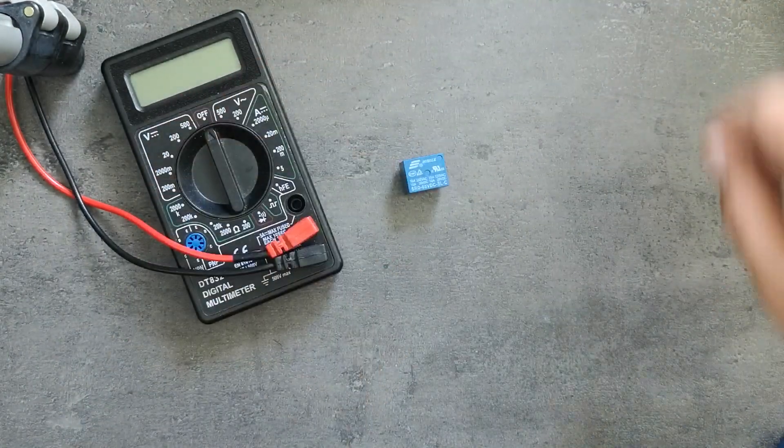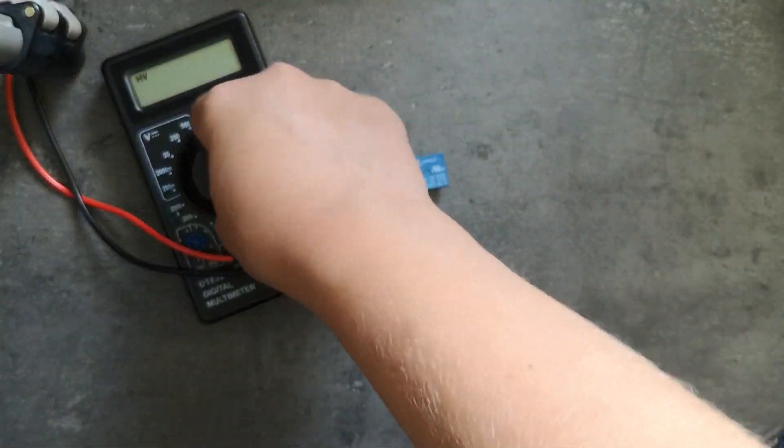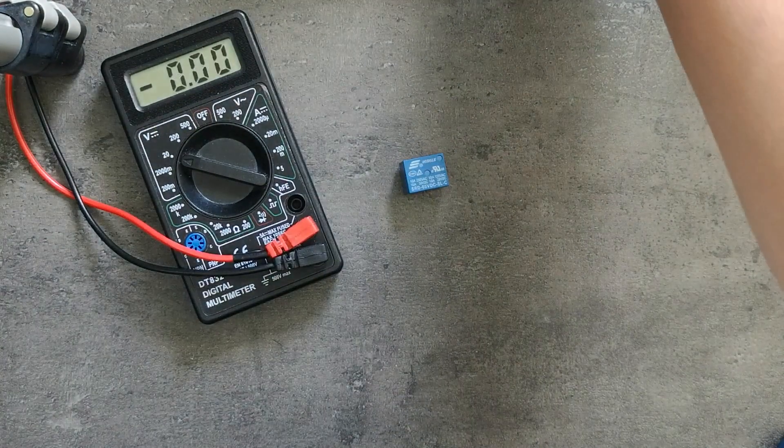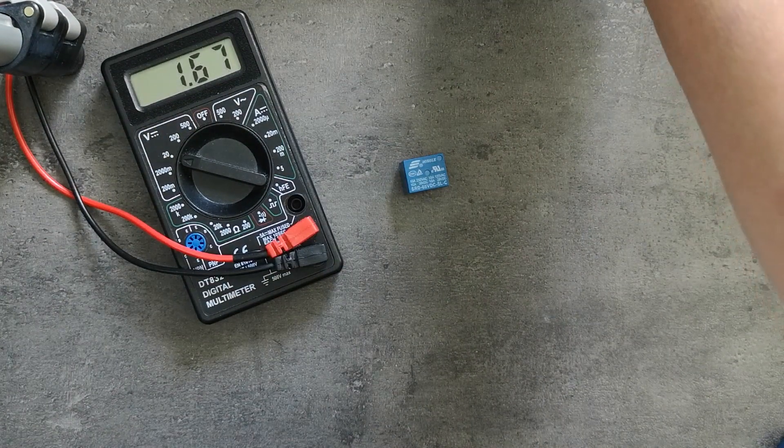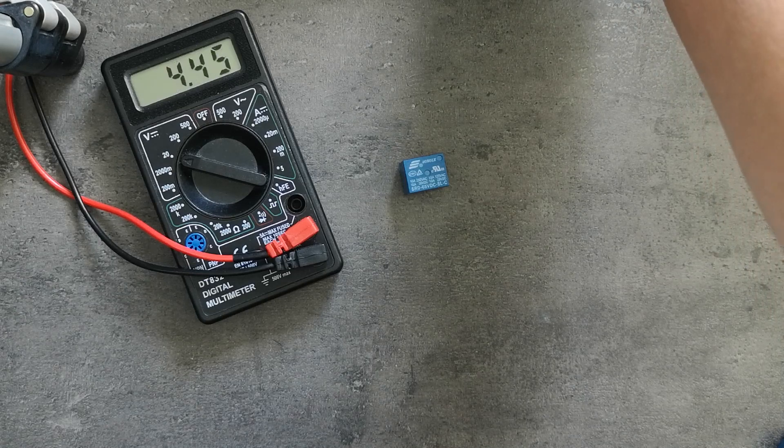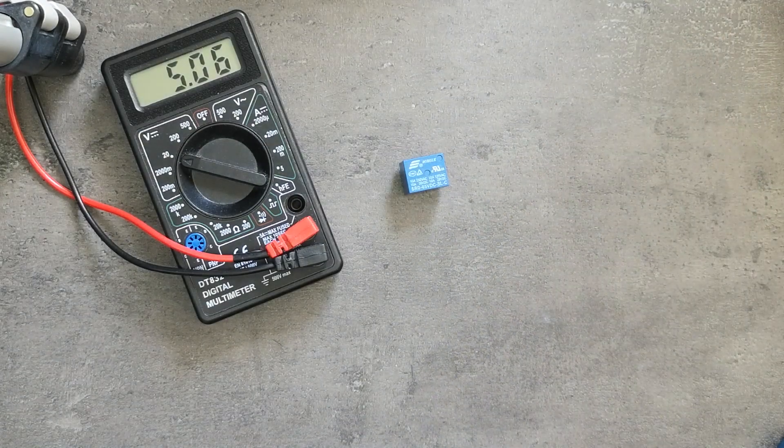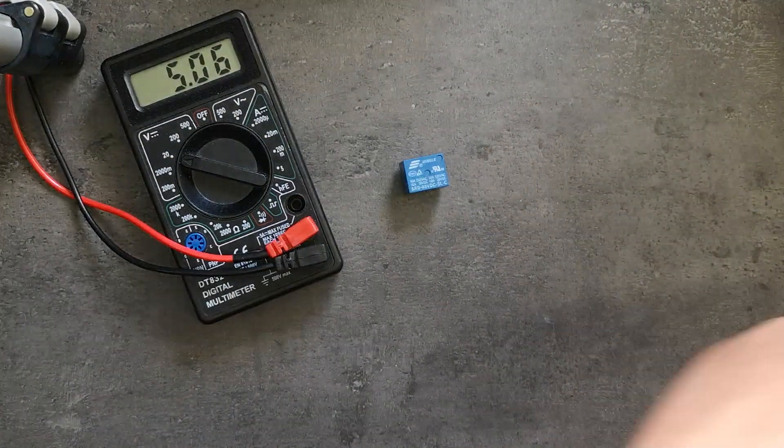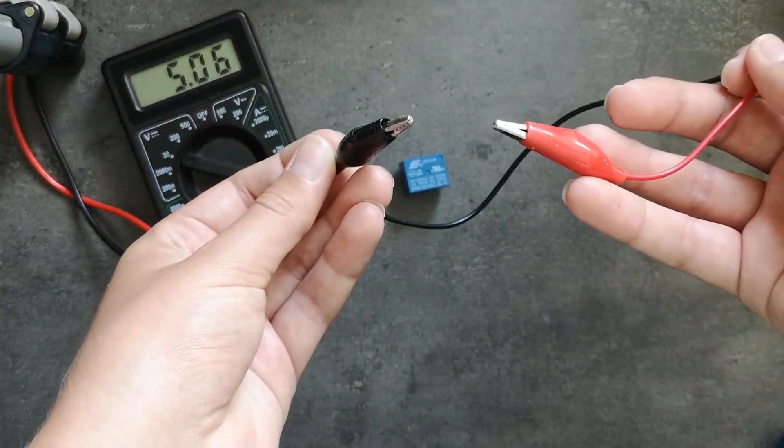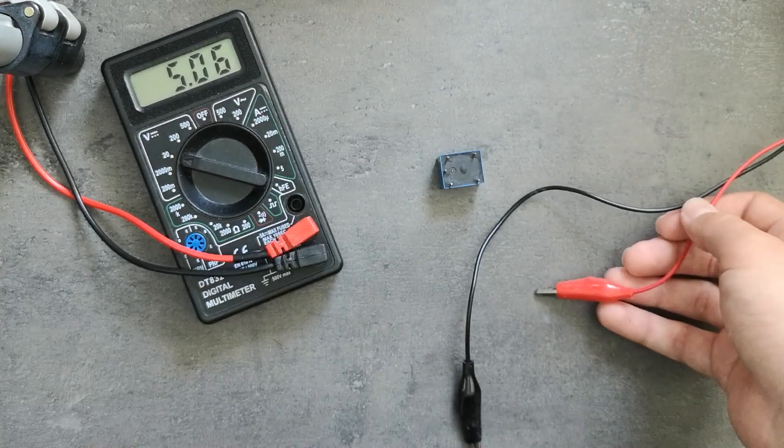So if we turn on a lab bench power supply and the multimeter and turn that to about 5 volts. So 5 volts and then grab the power of the lab bench power supply and apply it to the back.